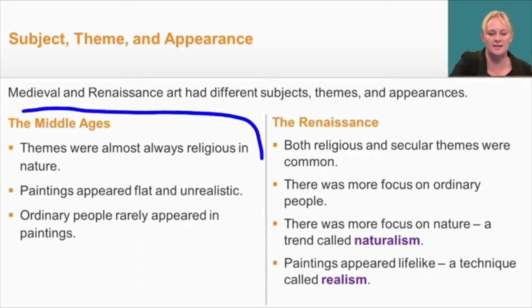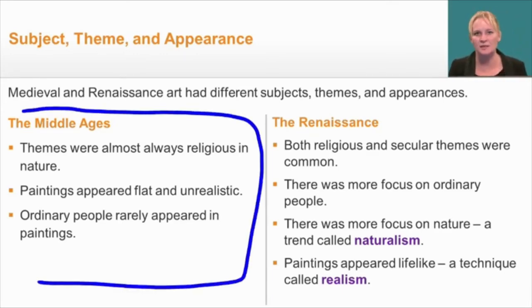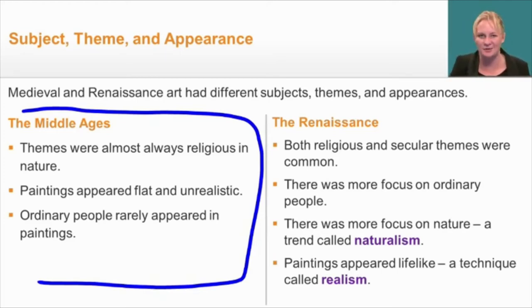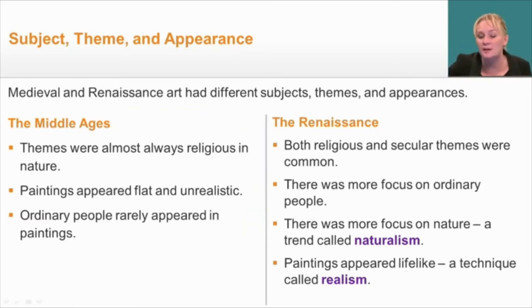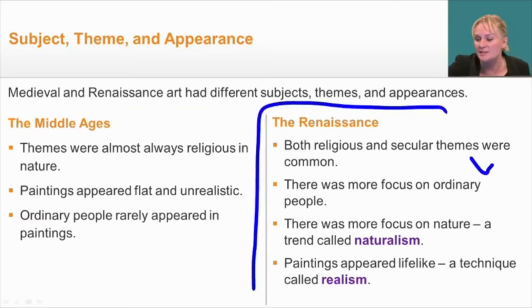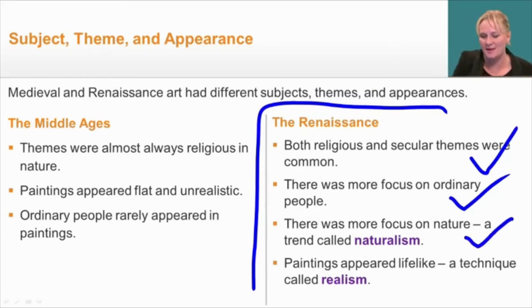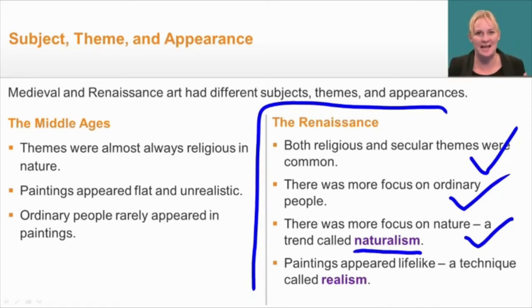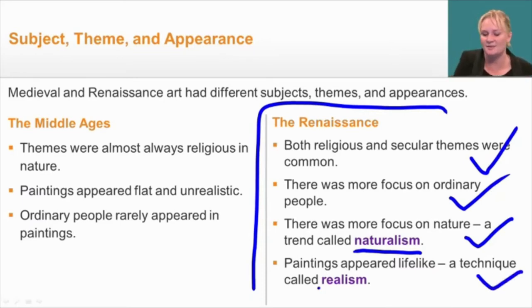In the Middle Ages, themes were almost always religious, with paintings hanging inside churches to illustrate biblical stories. The paintings appeared flat and unrealistic, and ordinary people rarely appeared. In the Renaissance, both religious and secular themes were common. There was more focus on ordinary people and on nature — a trend called naturalism — as seen when Renaissance artists put natural backgrounds behind Mary. The paintings also appeared lifelike, a technique called realism.